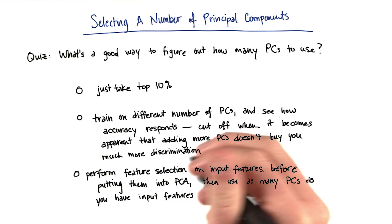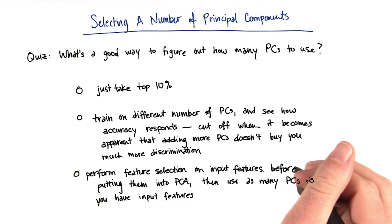And the third option is that you could perform feature selection on the input features before you put them into PCA. And then you just use as many principal components as you had from input features after you've performed that selection.